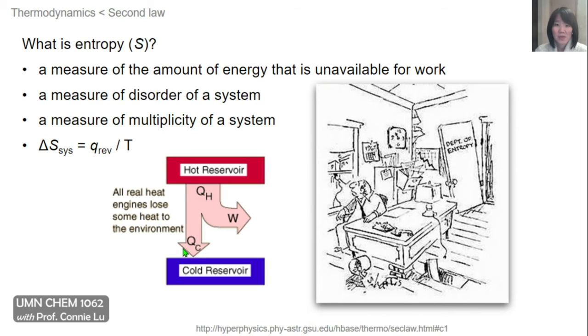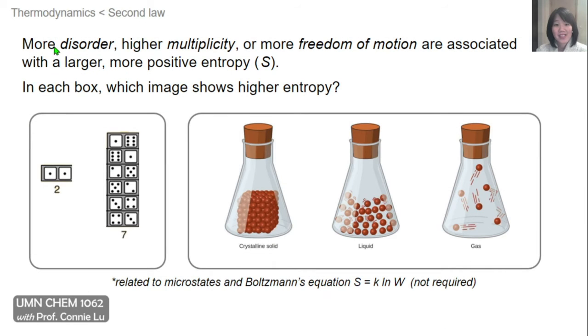In addition to disorder, higher multiplicity or more freedom of motion are also associated with a larger, more positive entropy. To help think about these concepts, I have some images shown below, and in each of these boxes, one of these images represents the highest entropy. In the first box, we have two dice that were thrown, and it's showing that there is only one combination that can sum to two.